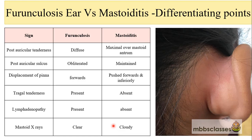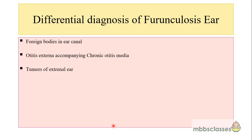Now let us see the differential diagnosis of furunculosis of the ear. Various disorders can produce similar clinical manifestations. These include foreign bodies in the ear canal, otitis externa accompanying chronic suppurative otitis media, and tumors of the external ear, all of which can mimic the clinical picture of furunculosis of the ear.